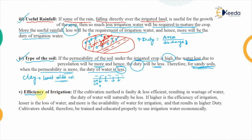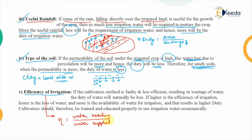The last factor is the efficiency of irrigation. This efficiency is defined as the ratio of the water which is reaching the roots of the crop to the water which is supplied. For example, if we have supplied 100 units of water but on the field only 80 units have reached, then the efficiency of irrigation is 80%, meaning the remaining 20 units were lost for different reasons. If the cultivation method is faulty and less efficient, there will be wastage of water, and therefore the duty of the water will naturally be less.